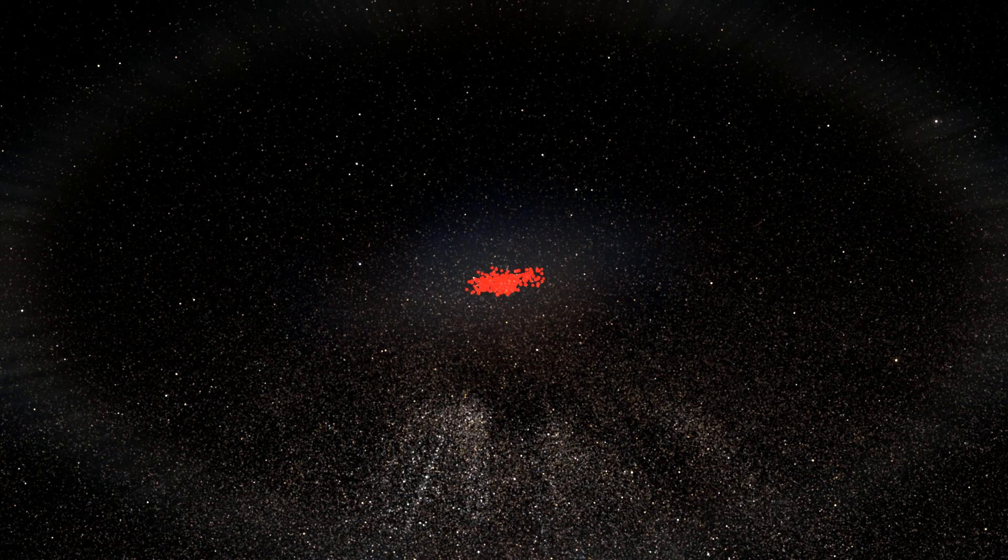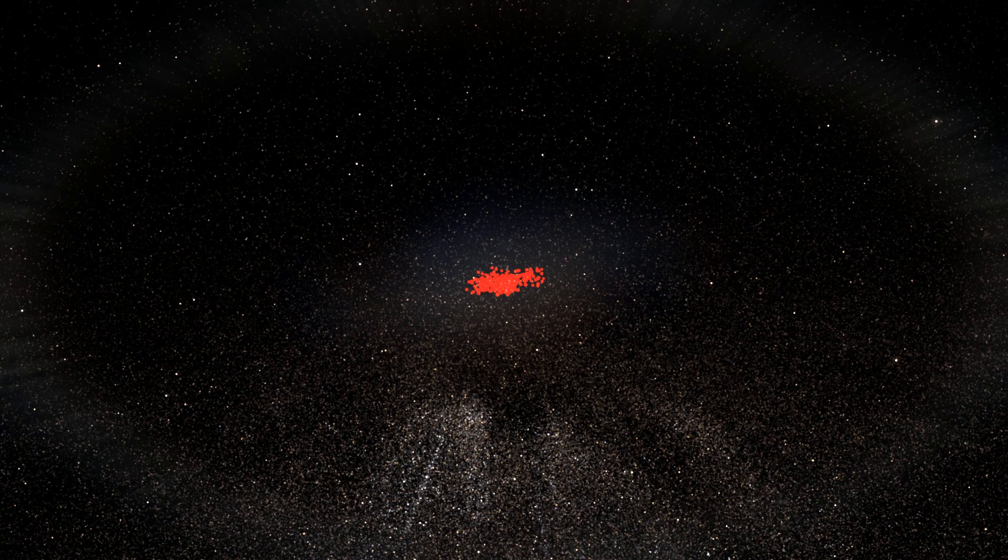Now we are 710 parsecs or 2300 light years away from the cluster but look into the same direction as from the Earth. The cluster is not round but elongated, showing that UBC 274 is dissolving due to tidal forces by the Milky Way.